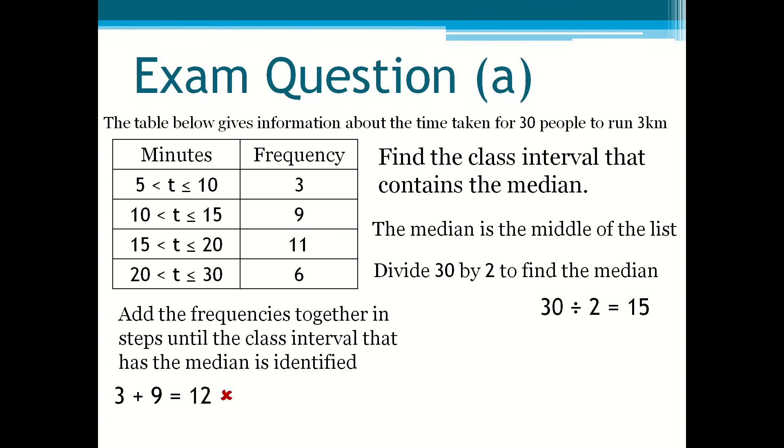So it means that it can't be in the second class interval or in the first class interval obviously. And then you have to do 12 plus 11 and that's equal to 23. 15 is smaller than 23 but greater than 12. Which means that we have found the class interval. And the median class interval is between 15 to 20 minutes.